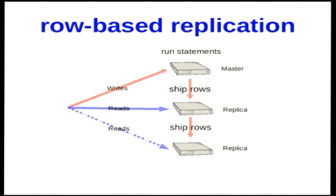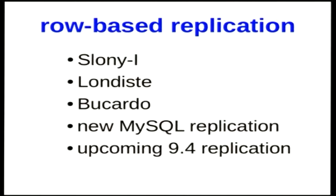The second replication mechanism is row-based replication. Writes go to a single master, and then the new versions of rows from the various tables get distributed to the replicas from that single master. This is better than statement-based replication because you eliminate inconsistencies around timing and random changes. Systems to do this in the Postgres world include Slony 1, Londiste, and Bucardo. Current MySQL built-in replication is essentially row-based. We're also returning to row-based replication with Postgres 9.4, which offers a new option for that.